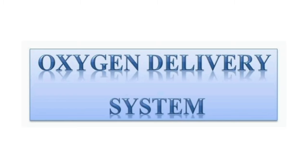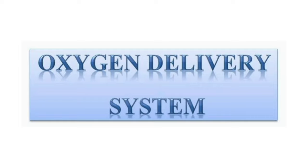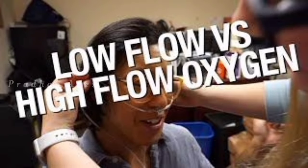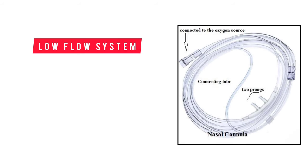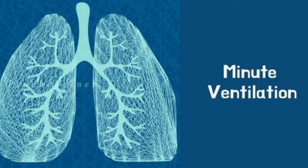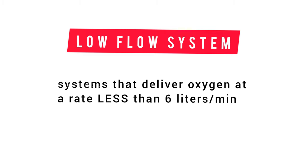Before we get into the different types of oxygen delivery systems, we need to go over a few key terms. First, we'll see types of systems referred to as low flow and high flow. Low flow systems, like nasal cannula, deliver oxygen at a rate that is less than the amount of air that the patient can inhale or exhale in one minute, called minute ventilation. The minute ventilation of a healthy adult male at rest is about 6 liters per minute, so low flow systems deliver oxygen at a rate less than 6 liters per minute.